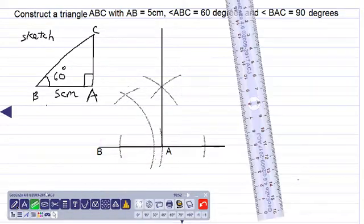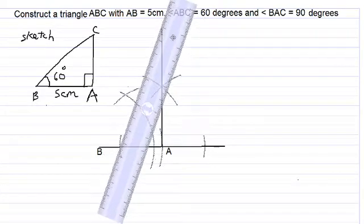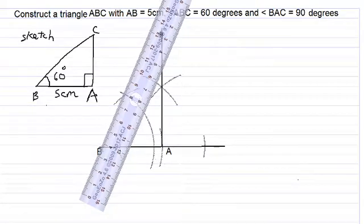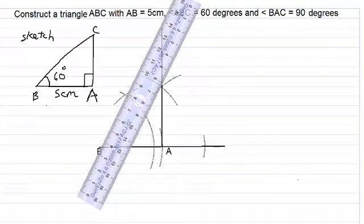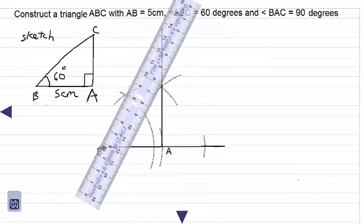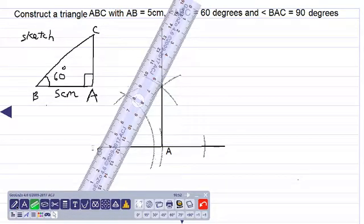Take out our long ruler and we draw a line which passes through B and our new point of intersection. And let us use a deeper pencil. Now let us draw a line.